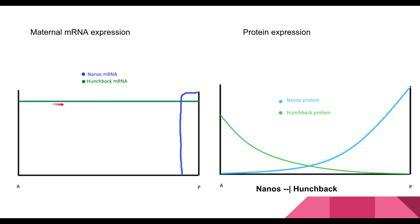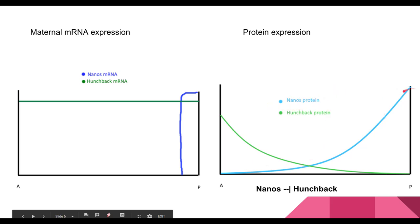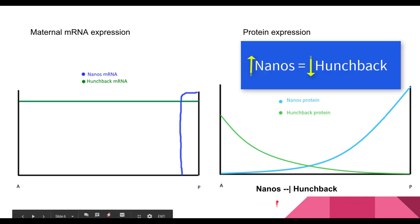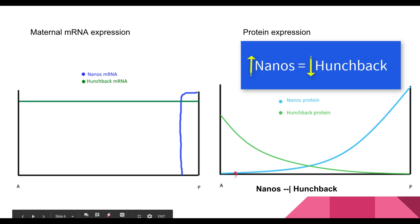Hunchback mRNA, if you notice, is quite consistent throughout the embryo — it's not localized anywhere, so it has very consistent levels from anterior to posterior. Looking at the protein graph, nanos protein is in light cyan turquoise and hunchback is in lime green. We know nanos represses hunchback, so at high levels of nanos we should see low levels of hunchback — and that is what we see. At the anterior end, there's practically no nanos, so hunchback levels are quite high. But as we move into the center and posterior area, we get more and more nanos, and hunchback starts to get repressed — that's why we see the concentration of hunchback fall off.